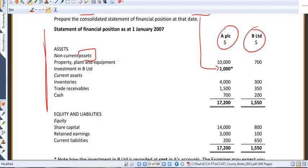Apart from that investment, you've got some other common figures: property, plant and equipment, inventories, receivables, cash, and even things like share capital, retained earnings, and current liabilities. So a fairly normal-looking statement of financial position.